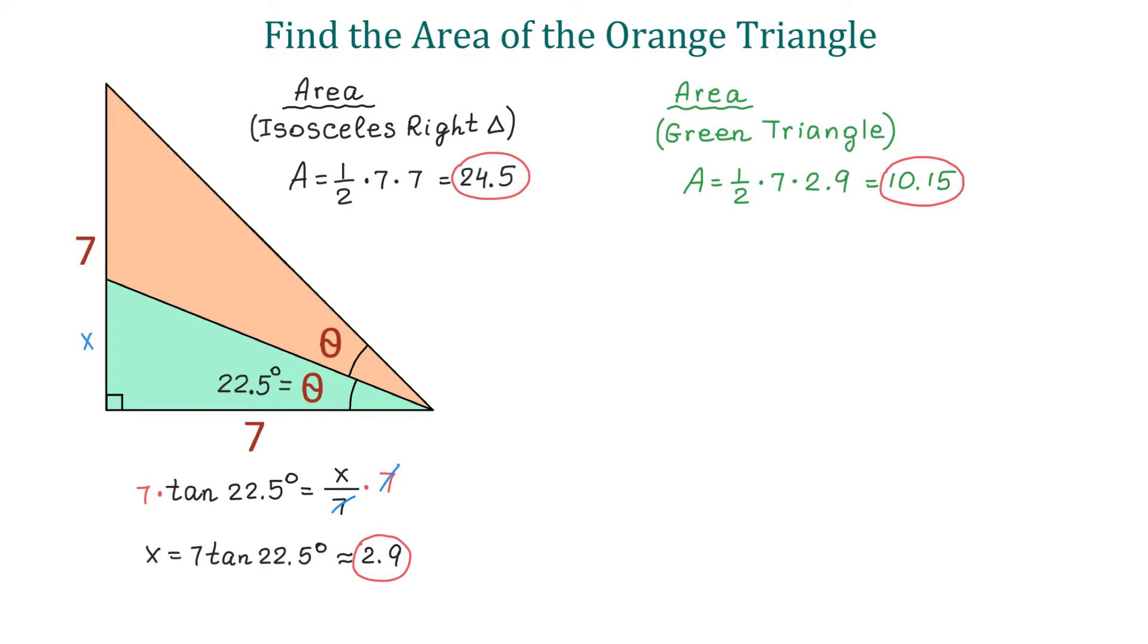And now, to find the area of the orange triangle, we will subtract these two areas. So, the area is 24.5 minus 10.15 and it is equal to 14.35.